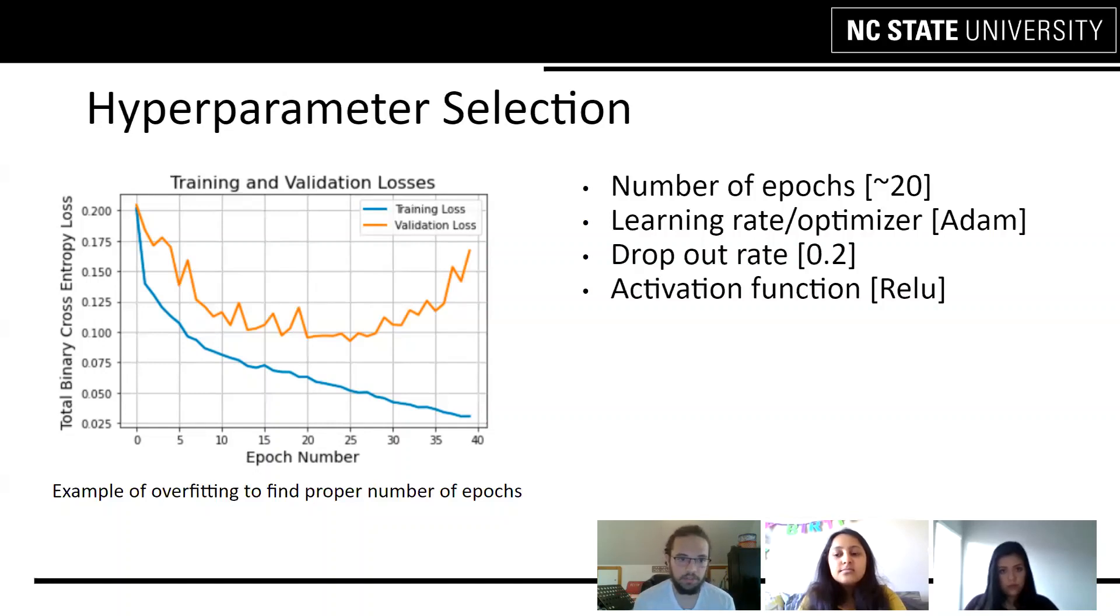The image on the left actually shows us overfitting a model just to see how many epochs it would take to properly train the model. And it was roughly between 20 and 25 epochs to fully train the model without overfitting. We started out trying to use stochastic gradient descent for our learning rate optimizer, but we didn't have meaningful results from that, so we stuck with Adam.